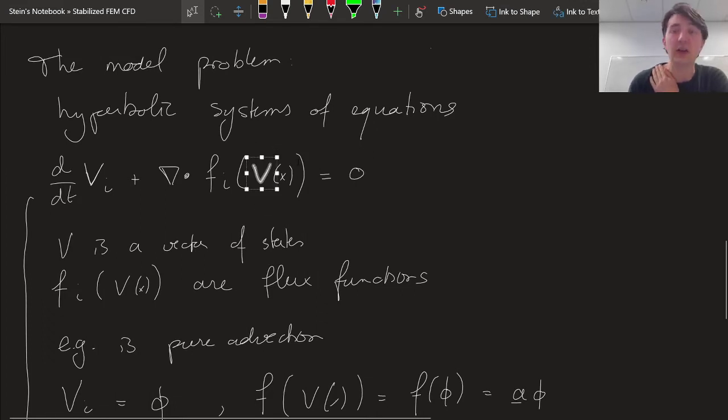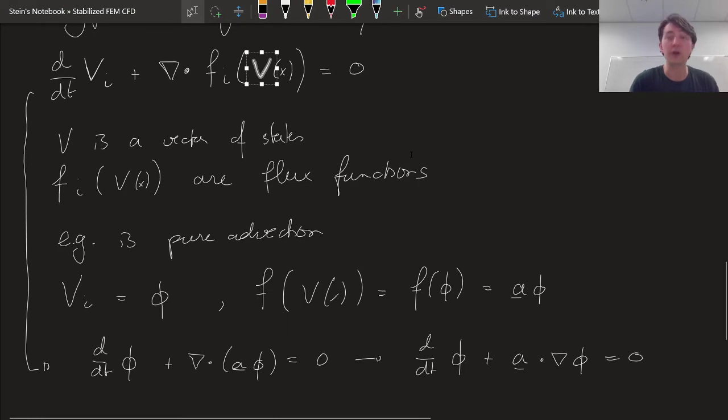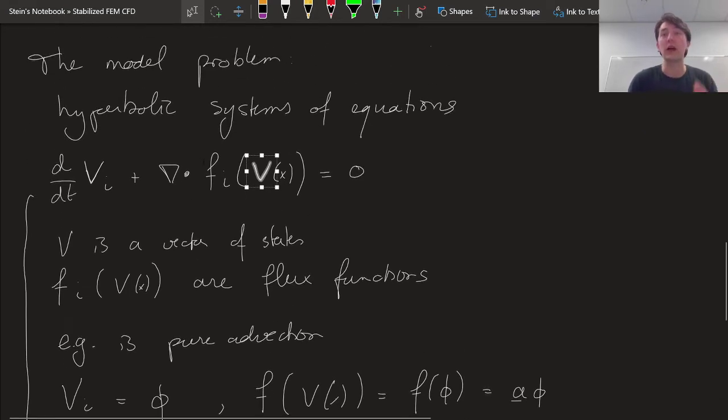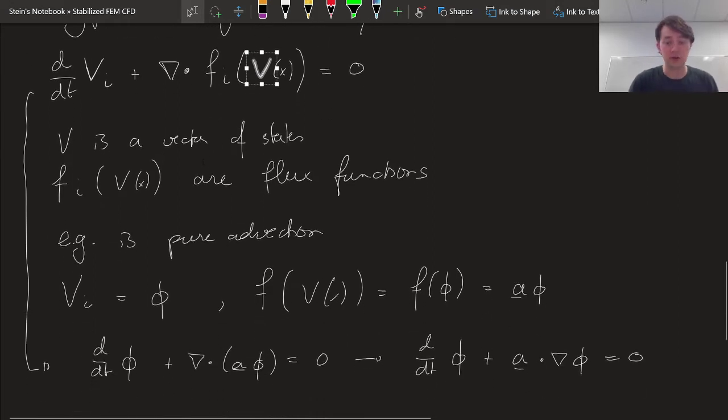But important right now, for this to be a hyperbolic system of equations, is if it only depends on the states and not on the derivatives of the states. If you also take the derivatives of the states, you can get parabolic partial differential equations, and the compressible Navier-Stokes equations would also follow. But for now,